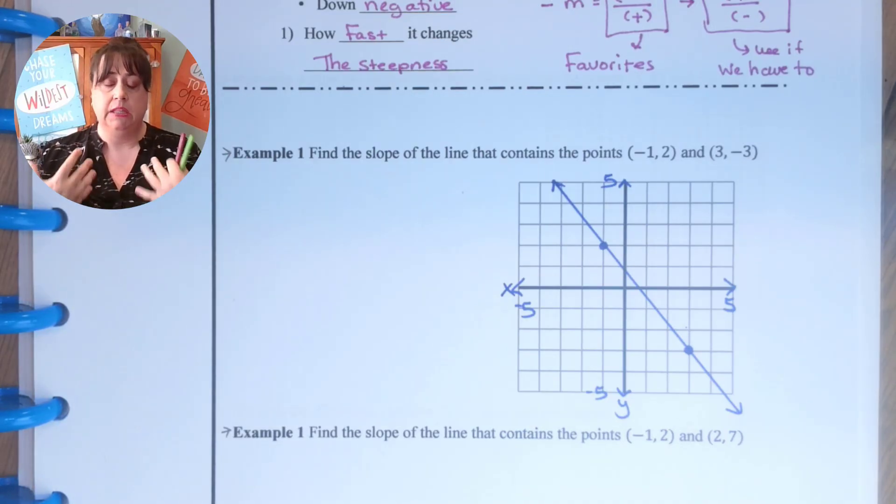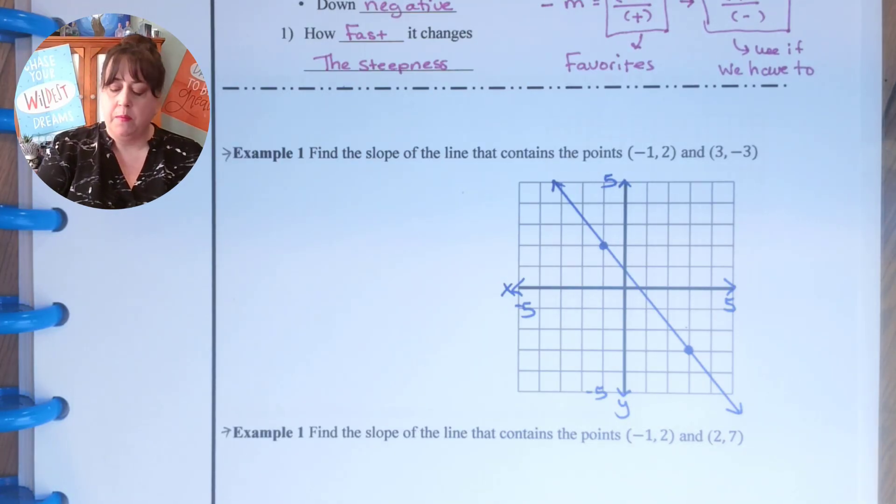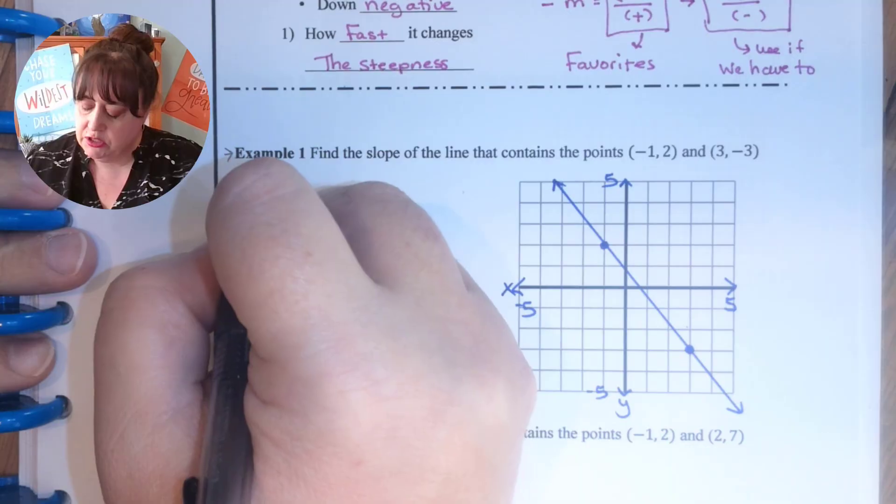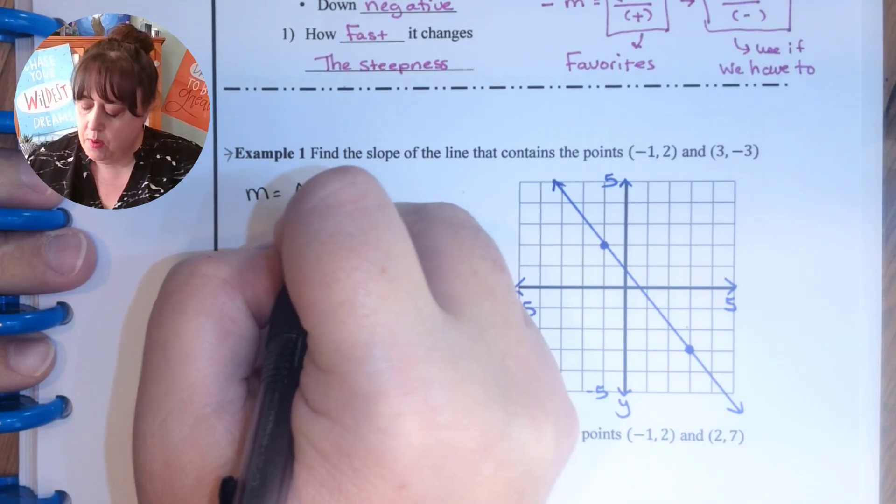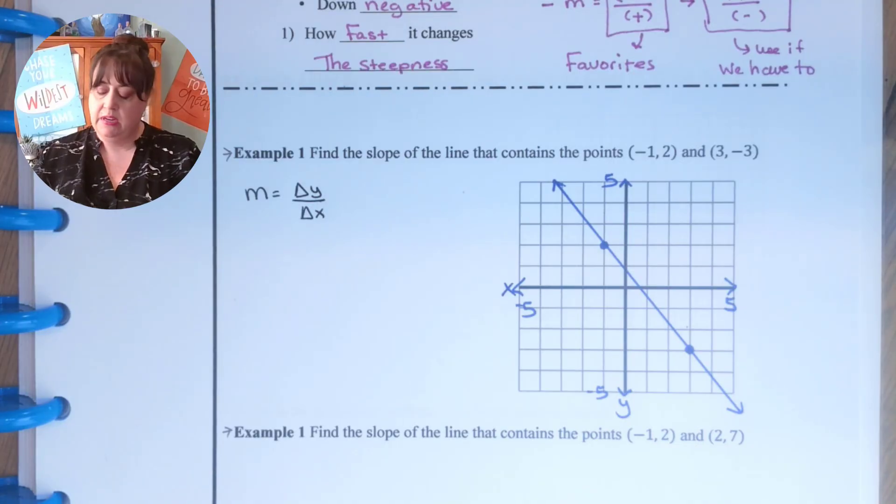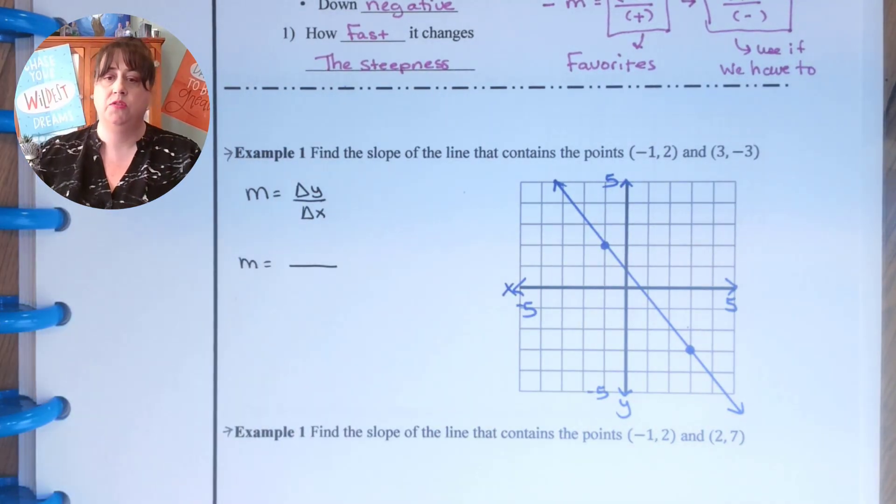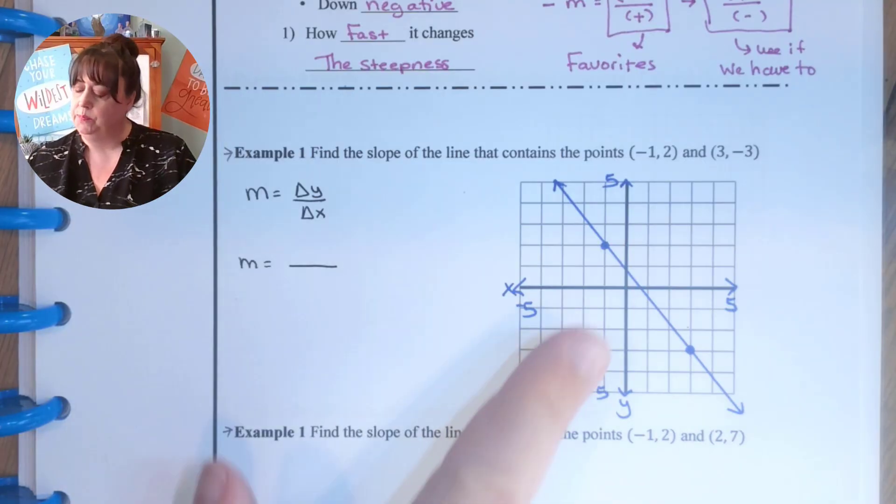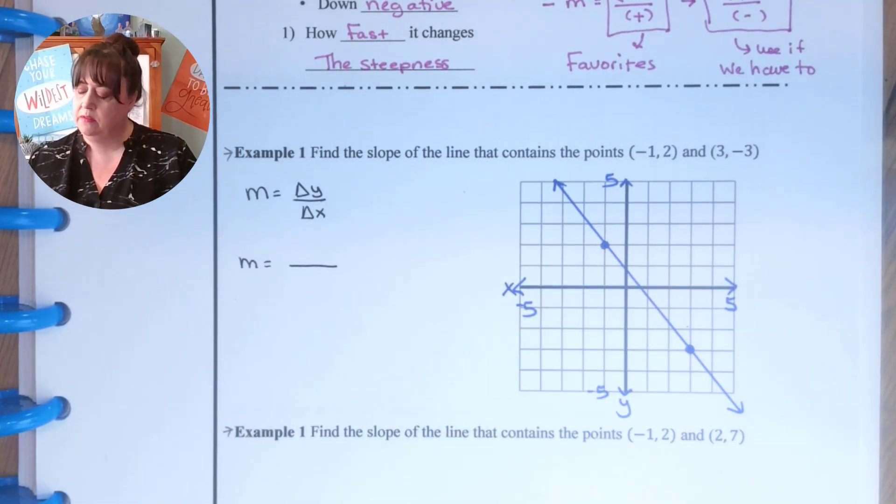I actually love these problems when they're on a graph because all you have to do is count. So we start off with what we remember, which is that slope is equal to delta y over delta x. And we write that down every single time. So I'm just going to count. That's all I'm going to do. What does it take to go from here to there?